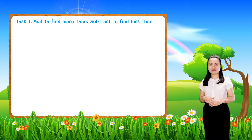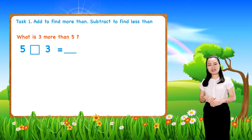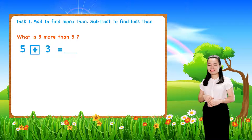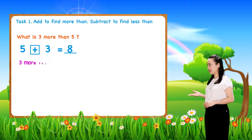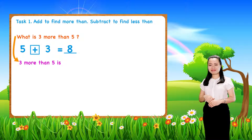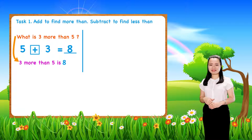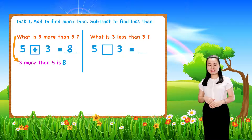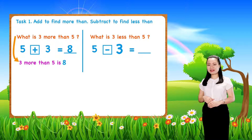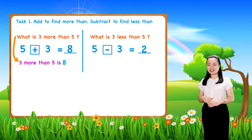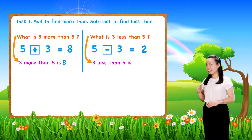Next, what is three more than five? We add five plus three equals eight. So, three more than five is eight. Next, what is three less than five? We subtract five minus three equals two. So, three less than five is two.